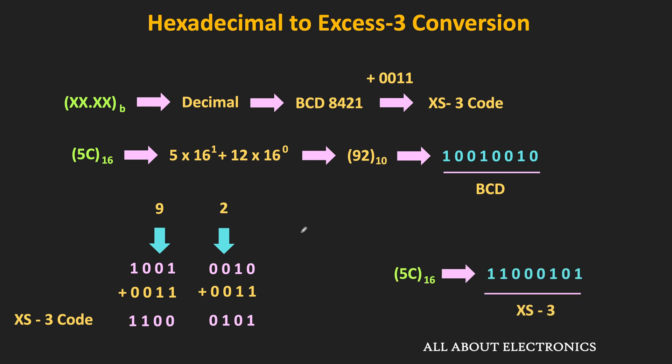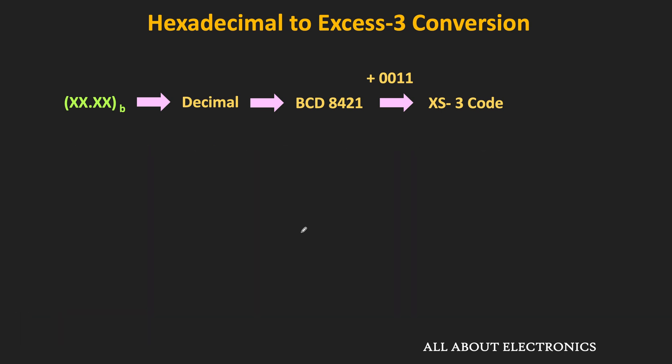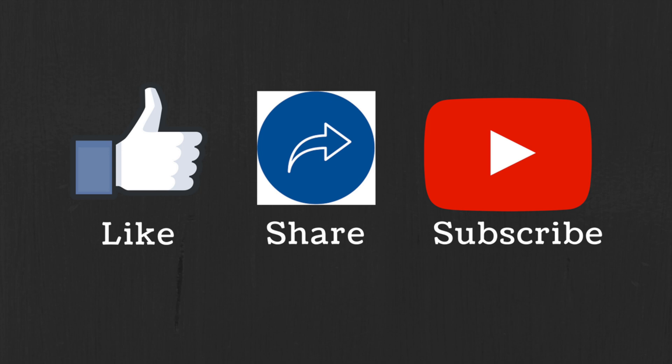Similarly, try to find the XS3 code for the given octal number and let me know your answer in the comments. So that's it for this video. I hope you learned about the different BCD codes and some important code conversions. If you have any question or suggestion, do let me know in the comment section below. If you like this video, hit the like button and subscribe to the channel for more such videos. Bye.